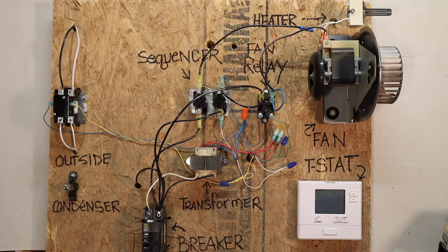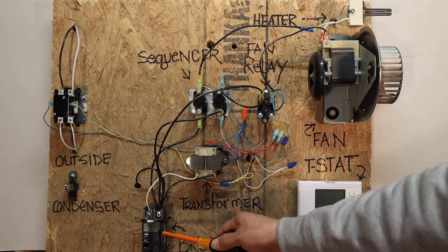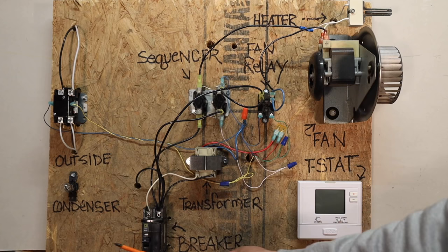First things first, we got a breaker. That's your main power supply for all your controls inside your air handler, which gets its power from the main power supply of the house.